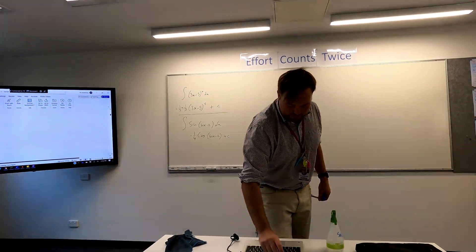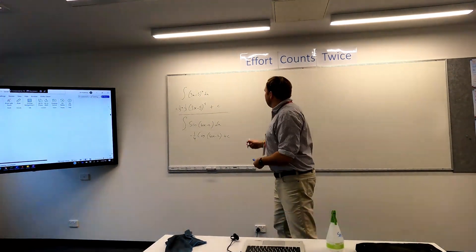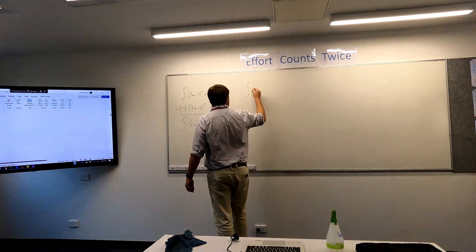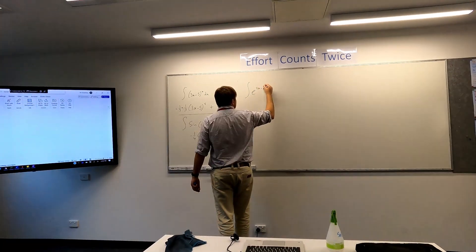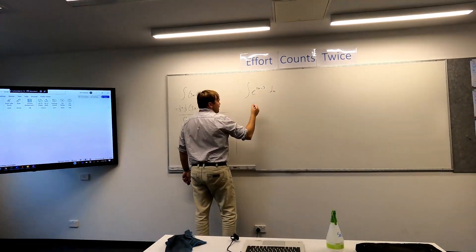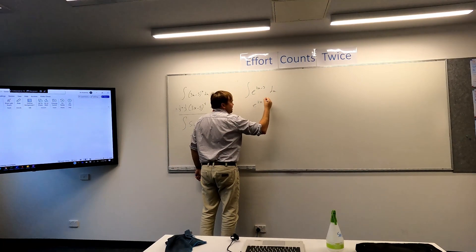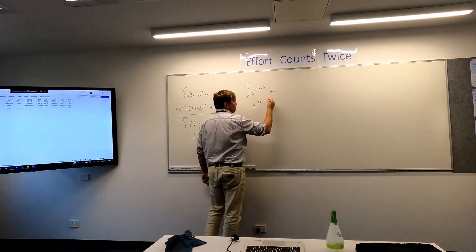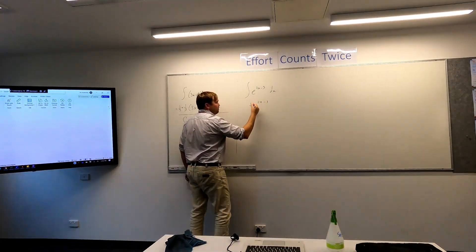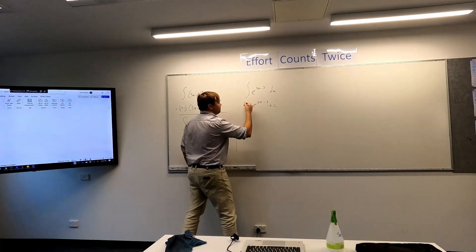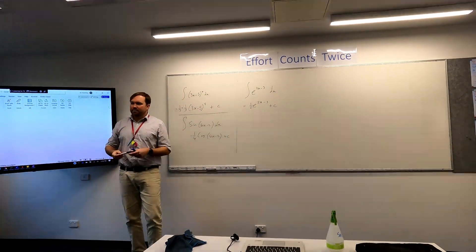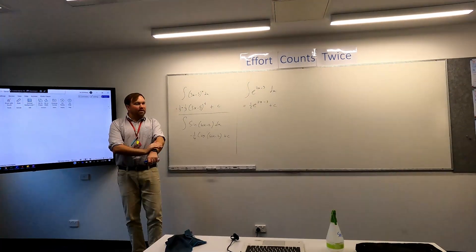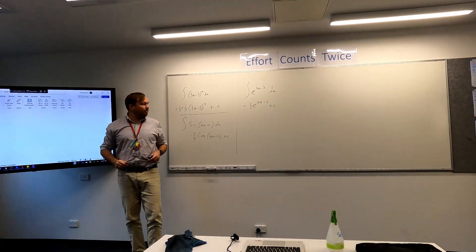Alright, one more example, and then we move on. The integral of e to the 2x minus 3 dx. It will have come from e to the 2x minus 3. And we need a half out the front plus c. So, nothing too bad or revolutionary.